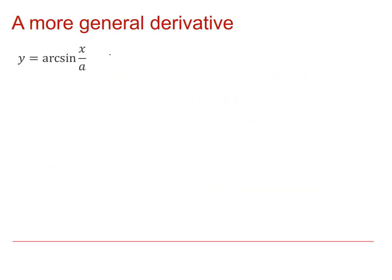Let's have a look at a more general derivative. I'm going to look at arcsin x over a. And again, just like last time, let's just rearrange this to tell me that sin y equals x over a. And then differentiate implicitly.